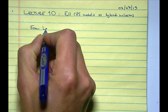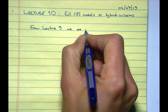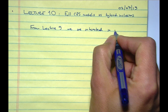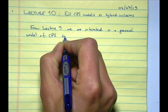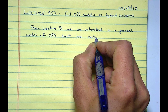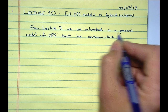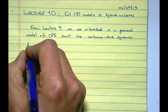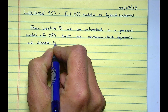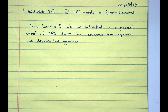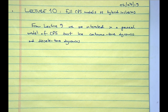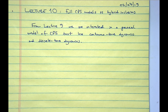From lecture 9, we are interested in a general model of CPS that has both continuous-time dynamics and discrete-time dynamics. There are many ways to do this. The way I'm proposing is what I'll write now, but the literature has many alternative approaches, each with different advantages and disadvantages.